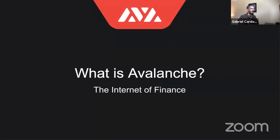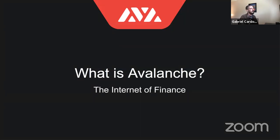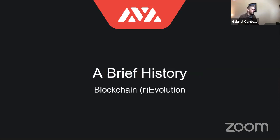So what is Avalanche? Avalanche is a global financial network for the issuing and trading of all digital goods. We enable millions of validators to process thousands of transactions per second with near-instant finality, using a protocol that is completely green and quiescent. We paired this high-throughput, fast-finality protocol with an architecture that meets the needs of unique financial products and decentralized applications through subnets.